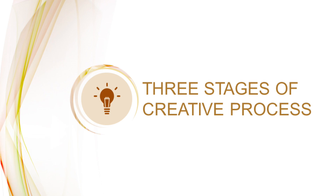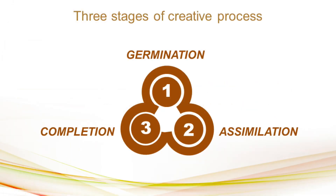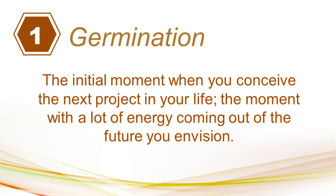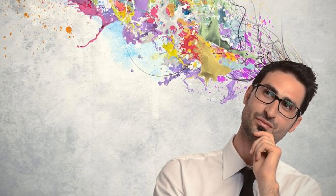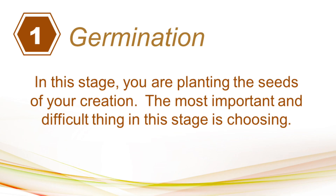Let's now move on to the three stages of the creative process. When you are creating an artwork, these are the three processes that could be undergone. First, we have germination. Second, assimilation. And the last is completion. Germination is the initial moment when you conceive the next project in your life. It is the moment with a lot of energy coming out of the future you envision — the moment when you think of the artwork you want to make. In this stage, you are planting the seeds of your creation. The most important and difficult thing in this stage is choosing, simply because you are actually thinking of a lot of new ideas.